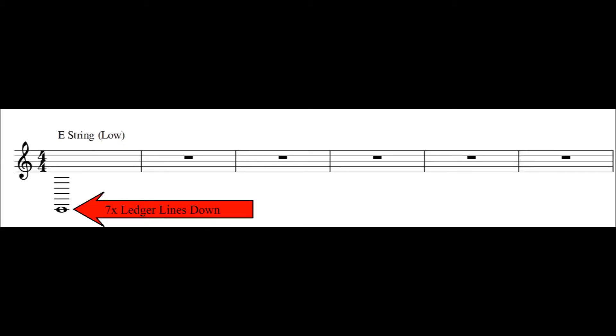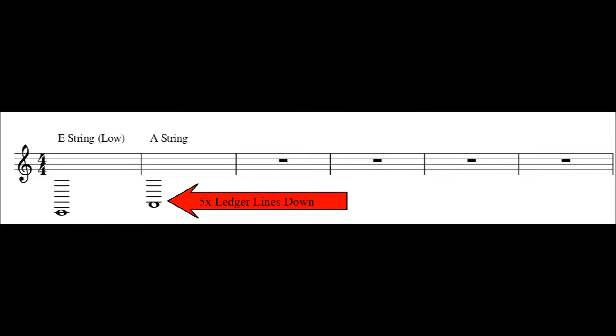In standard tuning the open strings on a guitar are as follows. The low E string is 7 ledger lines below the treble staff. The A string is just under the 5th ledger line below the staff. The D string is on the 4th ledger line below.